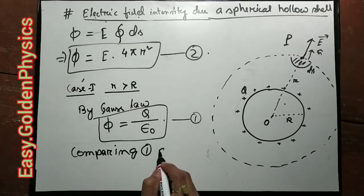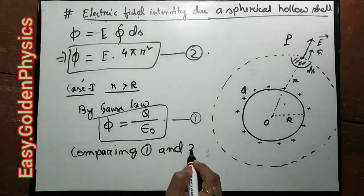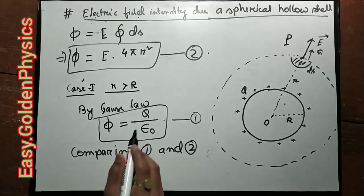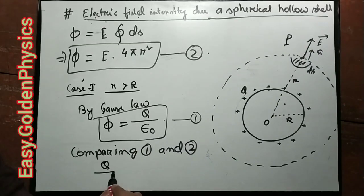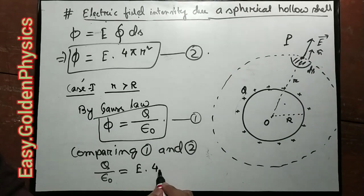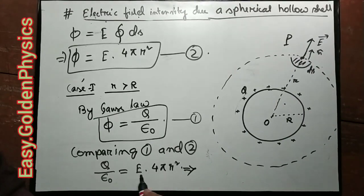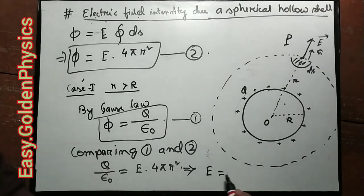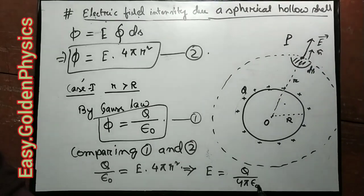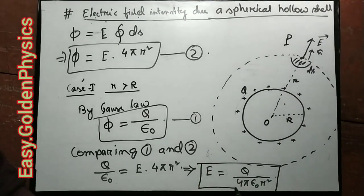Comparing equations 1 and 2: Q divided by epsilon naught equals E times 4 pi r squared.